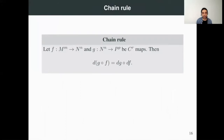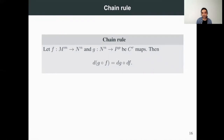Something else we get is that the chain rule holds. If we have a map F and a map G that are C^r, the composition satisfies that the differential of the composition is the composition of the differentials — that is the chain rule. This property holds also in our abstract case because what we do is transfer this property to the Euclidean case and realize that there it is just the chain rule.